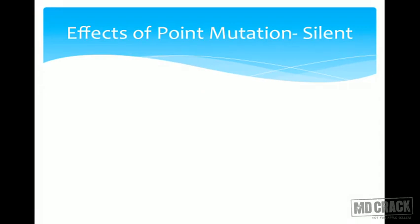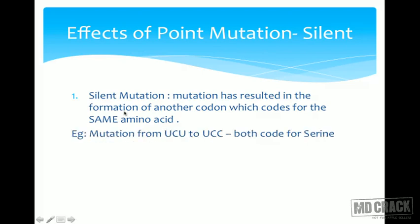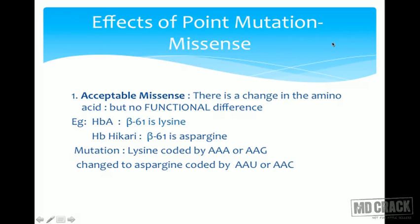The effects of point mutation: first, it might be a silent mutation, where the mutation results in another codon coding for the same amino acid. Since one amino acid can be coded by more than one codon, this makes no difference — the same protein is produced. Example: UCU to UCC, both code for serine.